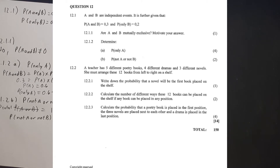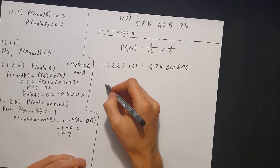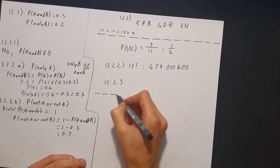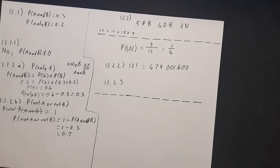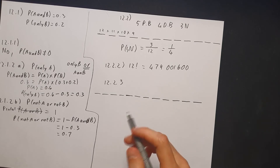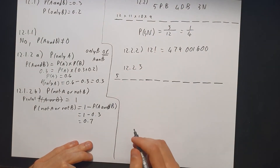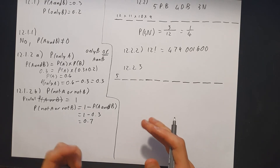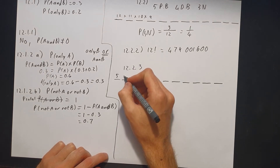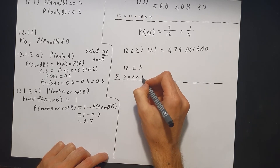Question 12.2.3: calculate the probability that a poetry book is placed in the first position, the three novels are placed next to each other, and a drama book is placed in the last position. Drawing out the 12 positions: the first position must be a poetry book — there are 5 possibilities. Then the three novels must be next to each other, giving 3 factorial arrangements for those novels.